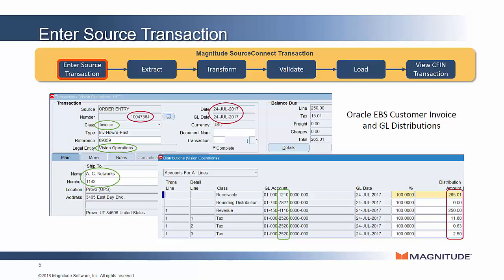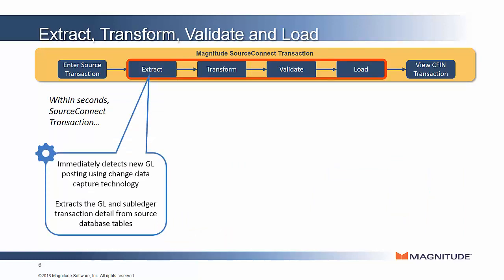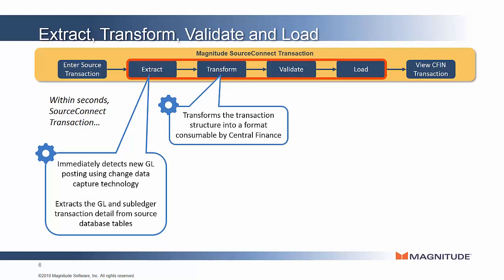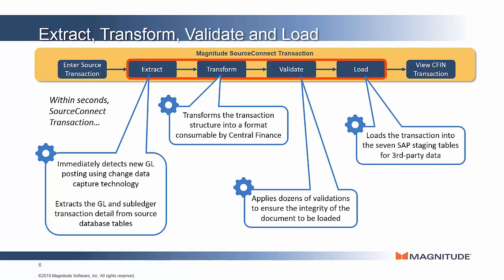A separate module, SourceConnect Harmonization, can help with this, or you can set this up yourself. Assuming the master data is mapped properly, SourceConnect Transaction will extract this invoice from all the necessary tables in Oracle eBusinessSuite, do several transformations against that data to get it into the right format to load into Central Finance, perform many validations to make sure that debits and credits balance out, the document doesn't have too many lines, and many others. Finally, it will load this invoice into the staging area comprised of seven different staging tables in SLT, and then SAP takes it from there to load into the Universal Journal.